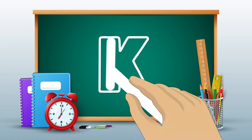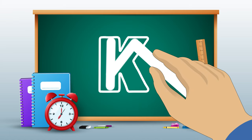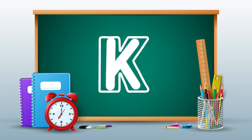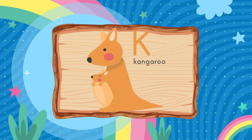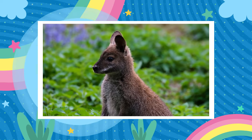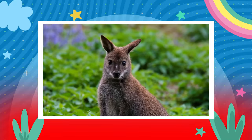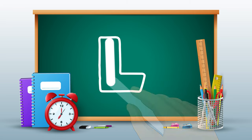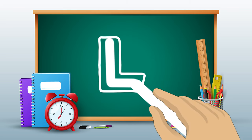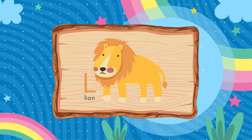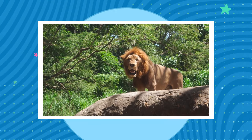Slant up, slant down. K is for Kangaroo. Kangaroo. Okay, time to learn the next letter L. Pull down, across. L is for Lion. Lion.